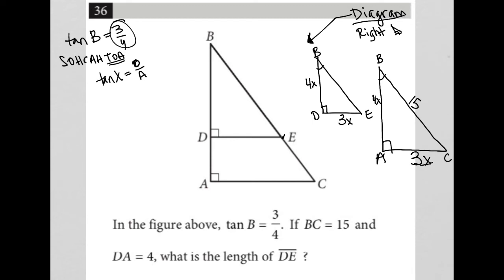So, when I do that, my 3x becomes 3 times 3, and therefore this is 9. And 4 times 3 becomes 12. So, right triangle BAC is, in essence, a 3, 4, 5 right triangle. It's just that those side lengths have been multiplied by 3.